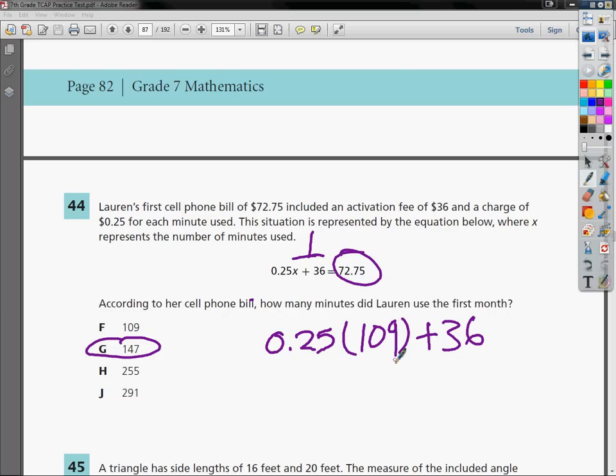So if I plug in 109 here, so just type into your calculator or whatever, 0.25 parenthesis 109 plus 36 and it equals 63.25, which does not mean the same thing as 72.75 so this is not the answer. Now if I do the same thing again, I'm going to try to make this a little smaller so I can not have to do so much rewriting.